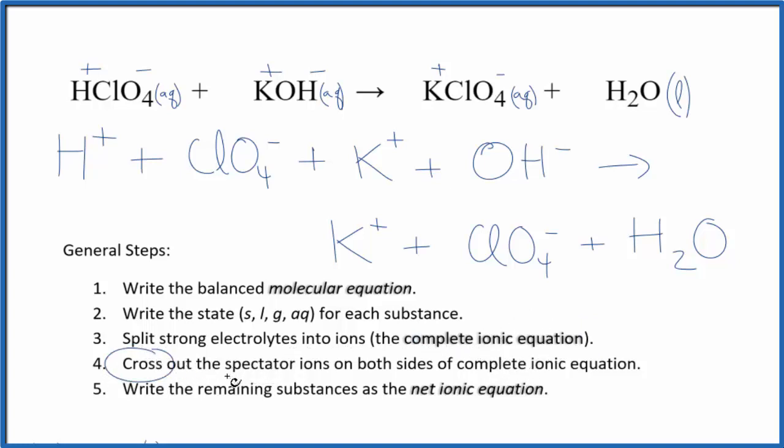Now we'll cross out spectator ions. They're on both sides. In essence, they haven't changed. We're not really interested in them. I can see here in the reactants I have a perchlorate ion and in the products. So I'm just going to cross that out. See I have a potassium ion here and in the products. Cross it out.